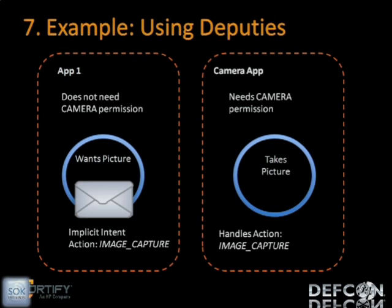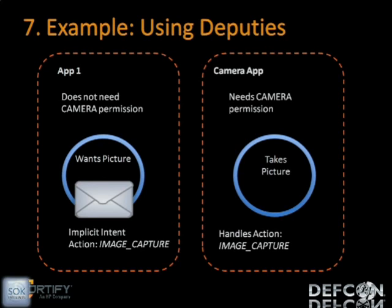Here's an example illustrating the confusion between accessing a protected API versus invoking an application that accesses one. We have two applications: a camera application that actually takes a picture and accesses the camera — it does need the camera permission. But then there's app one, which simply asks the camera application for a picture; it doesn't actually access the camera itself, so it doesn't need a camera permission. But the developer might think that since their application has something to do with cameras, it probably needs the camera permission — and end up with an overprivileged application.